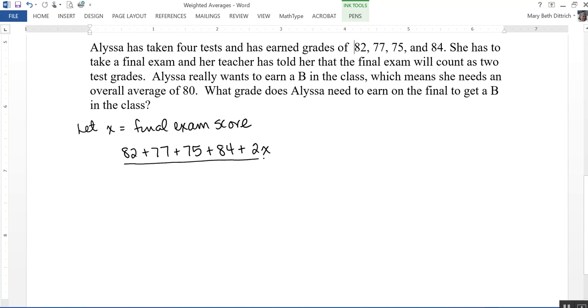And all of that totaled up, that's going to count as six scores, so I'll divide by six. And we want that to be at least 80%. So that's the equation you would write to calculate. Now let's go ahead and solve that. I'm going to start by combining these numbers on top.